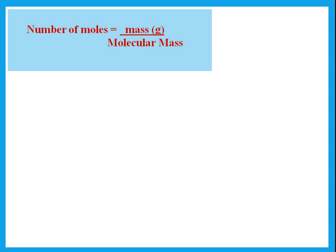To calculate the number of moles, there are three equations depending on what information is given. If given mass: number of moles n = mass m ÷ molecular mass Mᵣ. Rearranging: mass = n × Mᵣ. This equation is used only when dealing with masses.